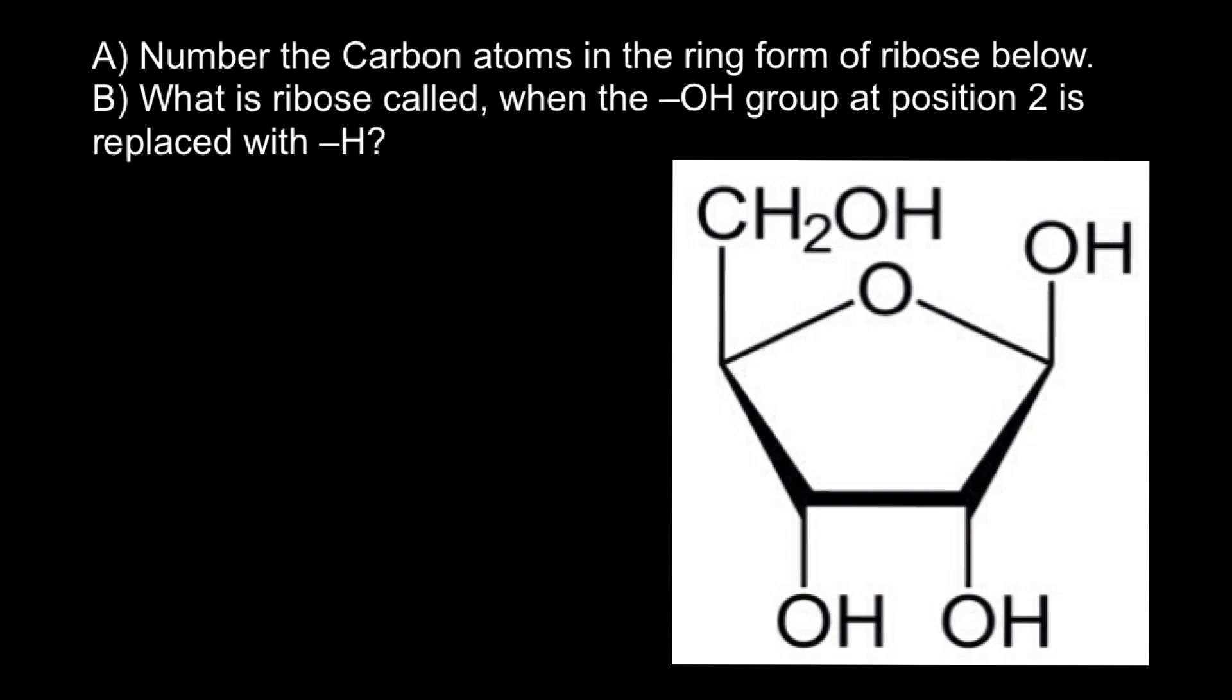Hello and welcome to Nikolai's genetics lessons. The first question is: number the carbon atoms in the ring form of ribose below. As you see, we basically accept this carbon, do not see any other carbons, but actually